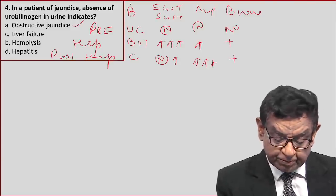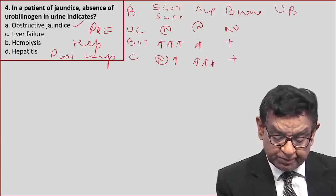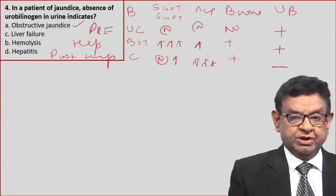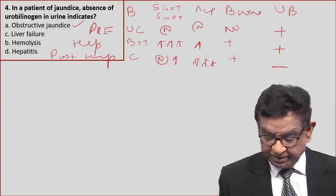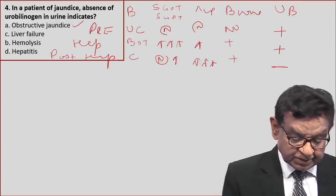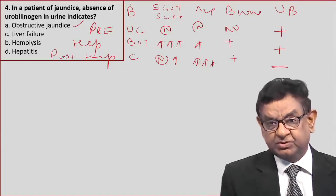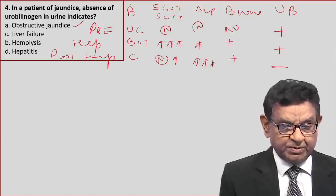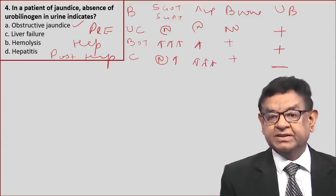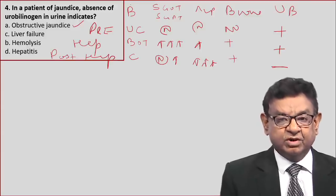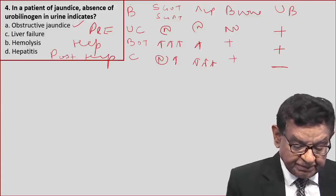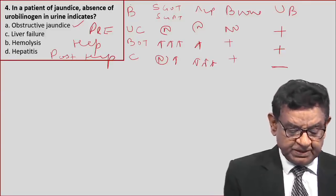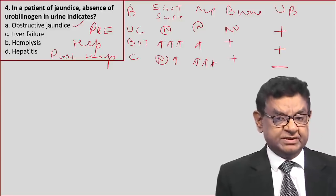Regarding urobilinogen in urine: it will be present in prehepatic and hepatic jaundice, but in complete obstruction urobilinogen will not be there. Hence, for obstructive jaundice the best answer is A — absence of bilirubin and urobilinogen in urine. In liver failure (hepatic type) we have both types of bilirubin; hemolysis is prehepatic; hepatitis is hepatic type. The best answer is A.